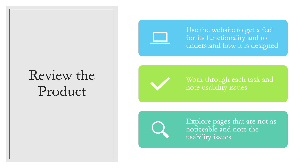For the third step, you'll actually be reviewing the product using the heuristics that you've chosen. You'll want to use the website to get a feel for its functionality and understand how it is designed — just look around, use things and get a feeling for how well it functions overall. Then you're going to work through each task and note usability issues: sign up for the website, complete the contact form, or add something to the cart and purchase it. You'll write down the usability issues — things that are going wrong or aren't working right.